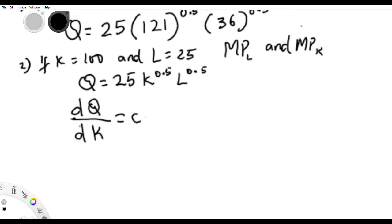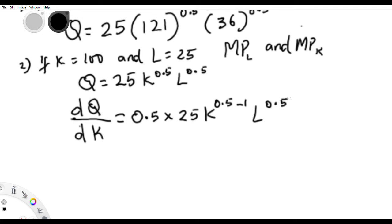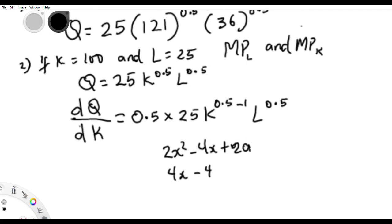Differentiating Q with respect to K: remember from differentiation, the power comes down to multiply — so it becomes 25K raised to the power of 0.5 minus 1, times L to the 0.5. Now some of you may wonder why L does not turn to zero.